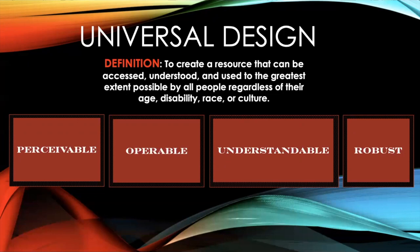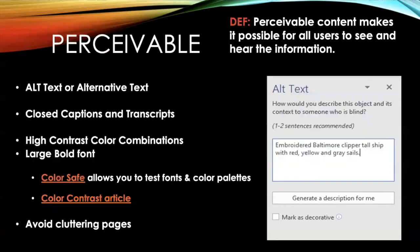The National Center on Accessible Educational Materials defines four critical areas for making sure content complies with universal design: perceivable, operable, understandable, and robust. So let's break those down one at a time.